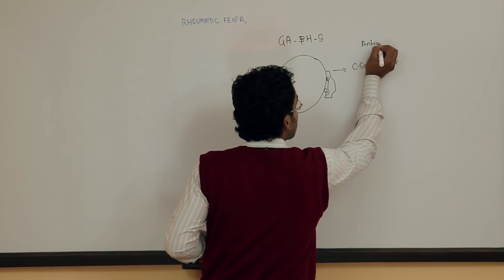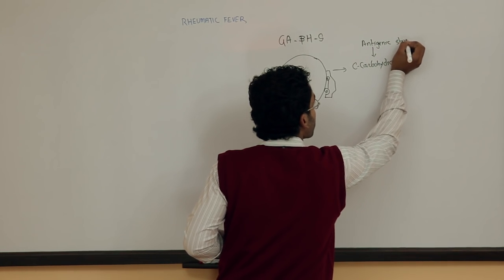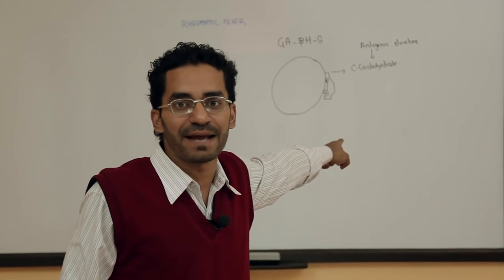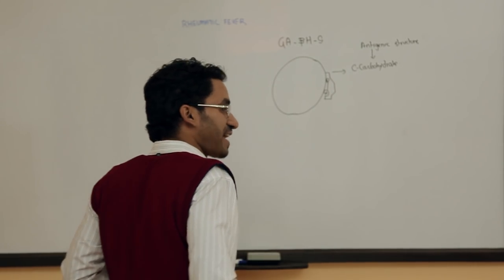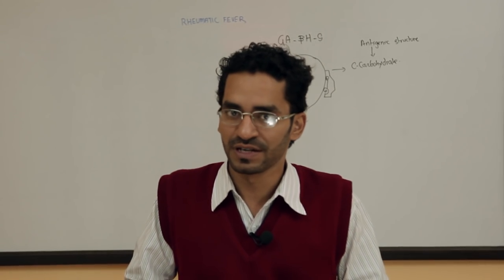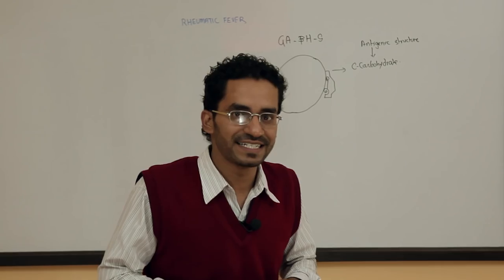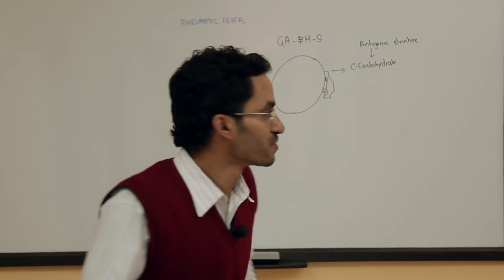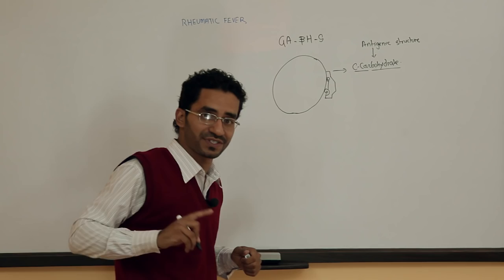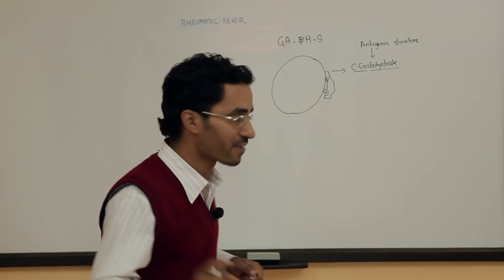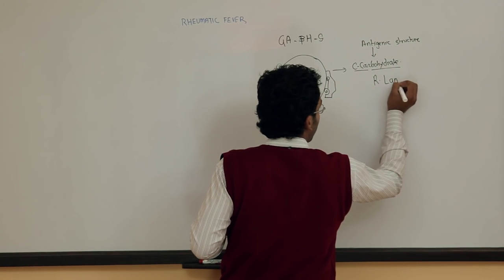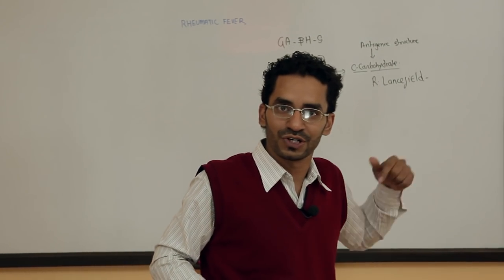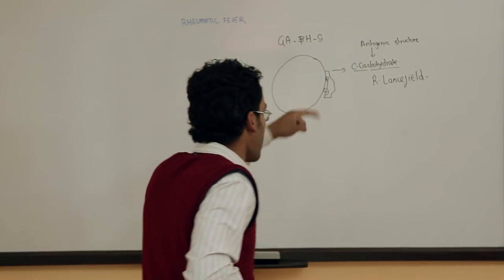Based on the different types of C carbohydrate present in the cell wall, the American microbiologist Rene Lancefield divided the streptococci into different groups — Group A, B, and so on — based on the types of C carbohydrate.